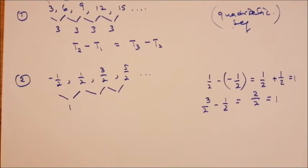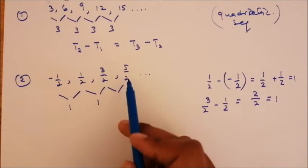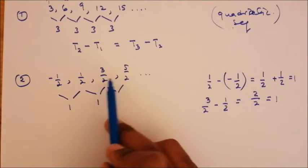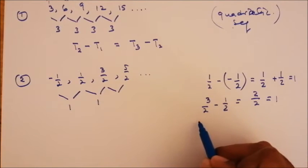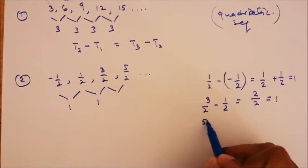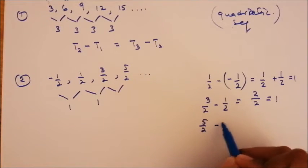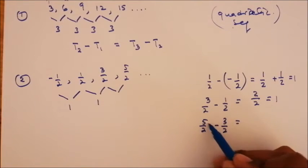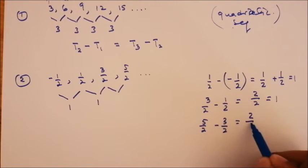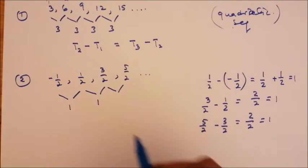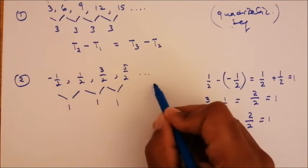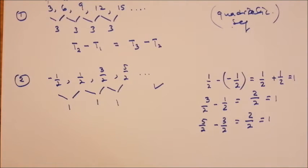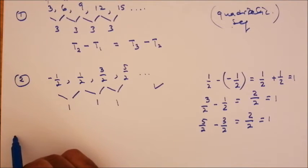Then 5/2 minus 3/2 equals (5 minus 3)/2 equals 2/2 which equals 1. So yes, this is an arithmetic sequence with a common difference of 1.